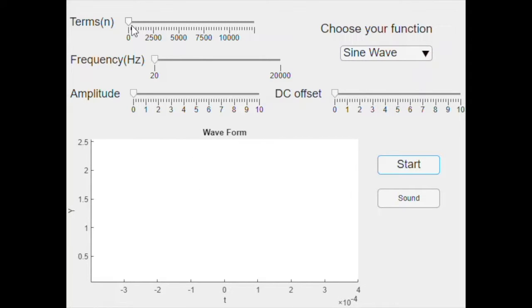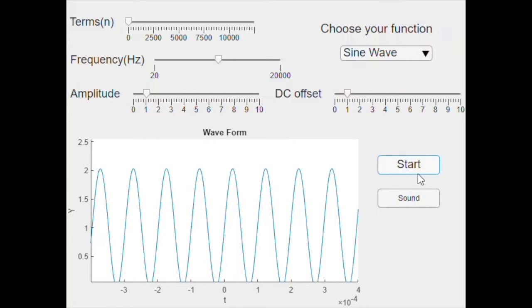And I'm going to display the function for you guys. So, let's go for the sine wave first. For sine wave, we do not need to consider the terms. So, we change frequency to about 10,000. And we change amplitude to 1, and DC offset to 1. And let's see. Here is our sine wave. And let's produce the sound.